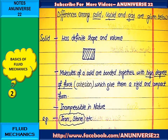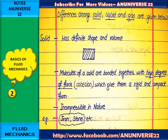The difference among solid, liquid and gas are given below. First one is solid. Solid has definite shape and volume, and in case of solid, the molecules of a solid are bonding together with a high degree of force — that is cohesion — which gives them a rigid and compact form. And solids are incompressible in nature. Iron and stone are some examples of solid.